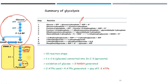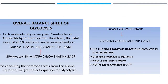For one glucose molecule, two molecules of ATP are produced per step, giving four ATP total. So overall this is a 10-reaction pathway in which one 6-carbon glucose molecule is converted to two 3-carbon pyruvate molecules. Glucose is oxidized, and two molecules of NADH are generated. In the preparatory phase two ATPs are consumed, and in the payoff phase four ATPs are generated, giving a net gain of two ATP.